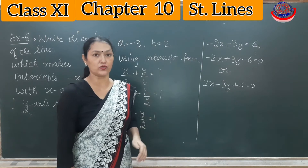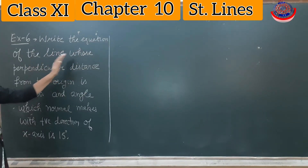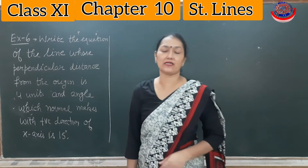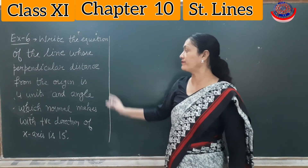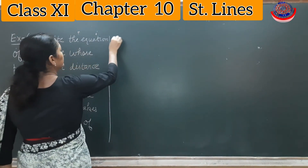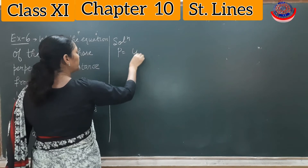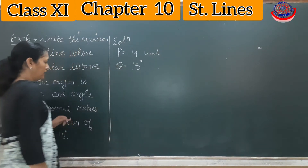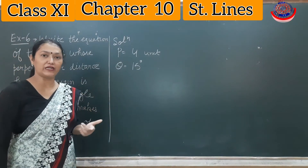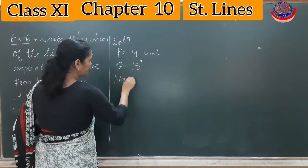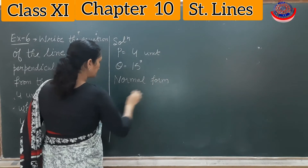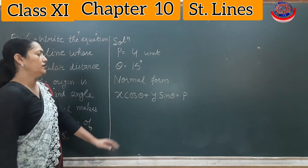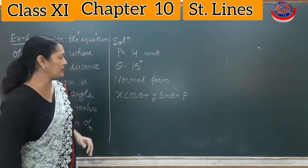Example 6 asks us to write the equation of the line whose perpendicular distance from the origin is 4 units and the angle of inclination with the positive x-axis is 15°. Since perpendicular distance p = 4 and angle θ = 15° are given, we will use the normal form: x cos θ + y sin θ = p.